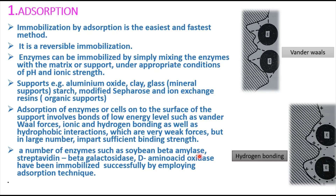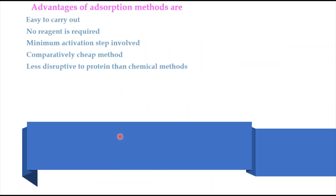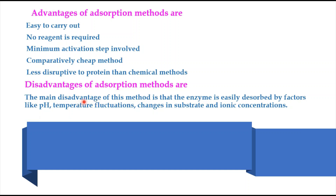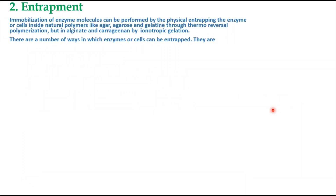Enzymes such as soybean beta-amylase, streptavidin, beta-galactosidase, and D-amino acid oxidase have been successfully immobilized using adsorption. Advantages of adsorption include: it is very easy to carry out, no reagents needed, minimizing chemical reactions, minimum activation steps involved, it is the cheapest method, and less disruptive to protein than chemical methods. The main disadvantage is that it can be easily desorbed by factors like pH, temperature fluctuations, changes in substrate, and ionic concentration.